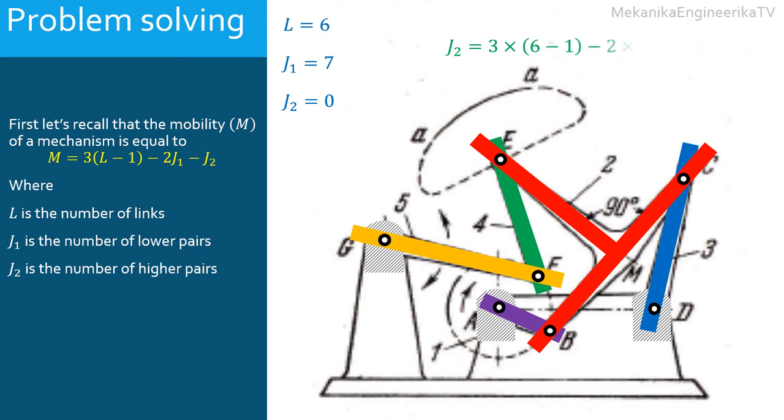This mechanism is built from 6 links using 7 lower kinematic pairs and no higher pairs. Thus, the mobility is equal to 3 times 6 minus 1, minus 2 times 7, minus 0. Hence, the mobility is equal to 1. This mechanism has then 1 degree of freedom. This mechanism allows 1 input. It is only possible to control externally only 1 link. If the position of 1 link, the input, is given, it is then possible to predict the positions of all other links. Actually, this mechanism is the Watt 6 bar mechanism.